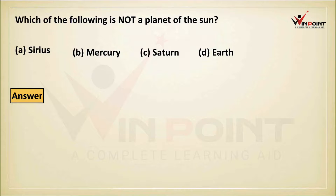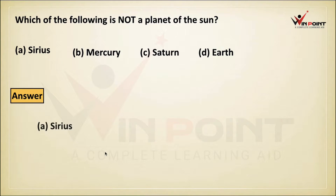Which of the following is not a planet of the sun? Sirius, Mercury, Saturn, Earth. Sirius is a star, so the answer is Sirius.